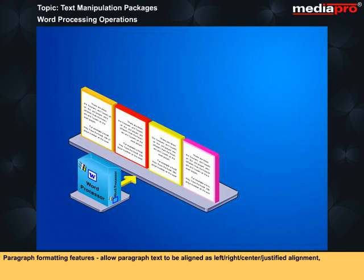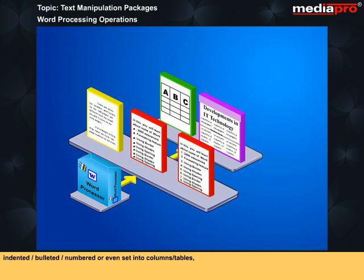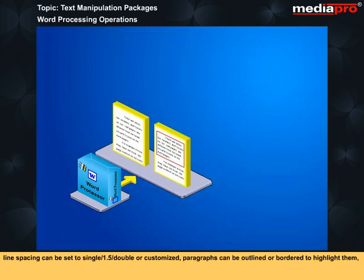Borders can be outlined and the orientation can be set to landscape or portrait. Paragraph formatting features allow paragraph text to be aligned as left, right, or center justified alignment, indented, bulleted, numbered, or even set into columns and tables. Line spacing can be set to single, one and a half, or double, or customized. Paragraphs can be outlined or bordered to highlight them.